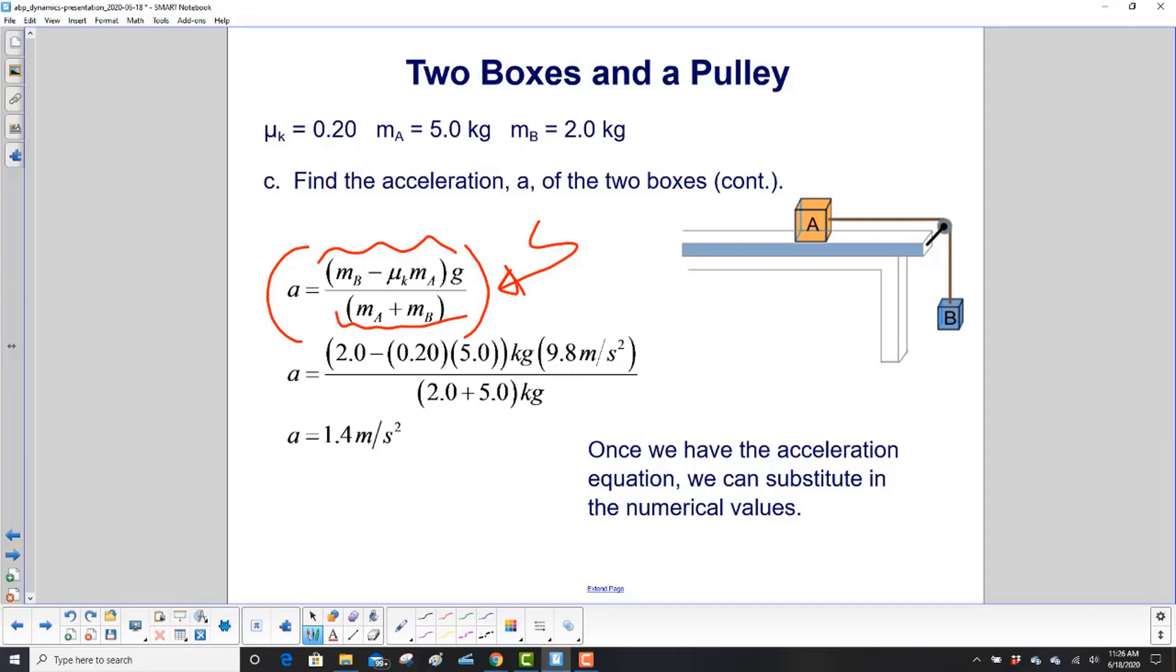So the idea is just do it at the end where we have all the numbers. And this is bad enough, but at least we can kind of keep track of what we have. We have the mass of B minus the coefficient of friction, which is unitless, times the mass, which is in kilograms.